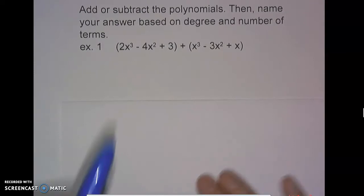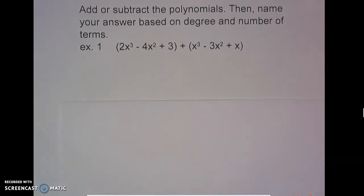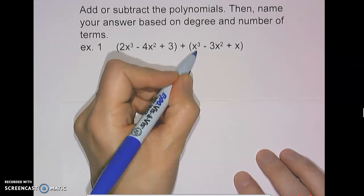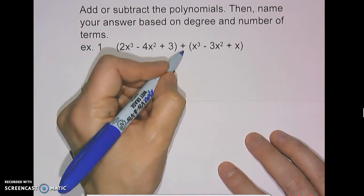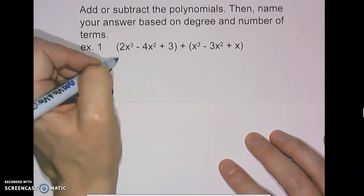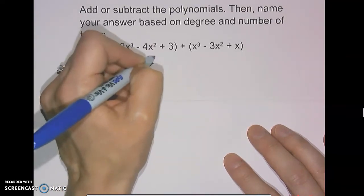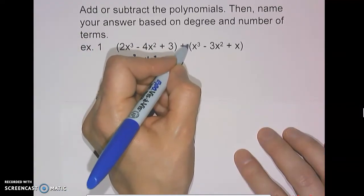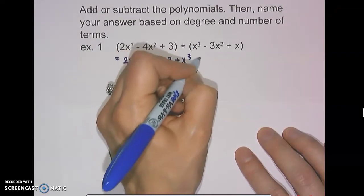Here we have the quantity 2x cubed minus 4x squared plus 3, and we're adding because there's a plus sign in the middle. We're adding the quantity x cubed minus 3x squared plus x. When we're adding, the parentheses don't matter because there's a positive 1 in front, and distributing that positive 1 in is not going to change the signs of anything.